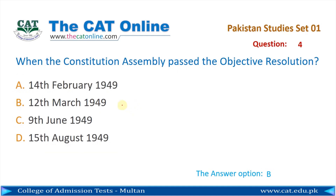Question number 4: When did the Constitution Assembly pass the Objective Resolution? Constitution Assembly نے Objective Resolution کب پاس کیا? The correct answer is B — بارہ مارچ انیس سو انچاس (12 March 1949).